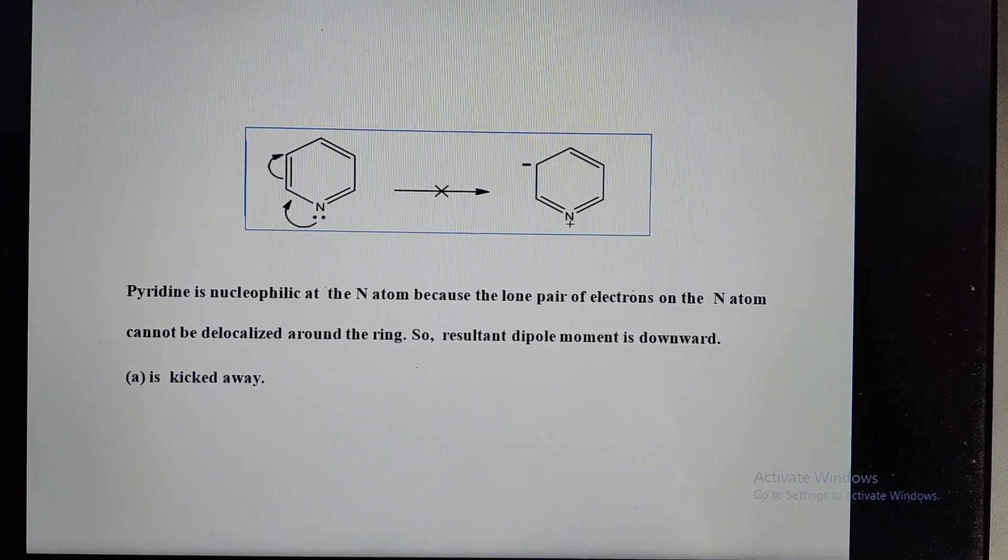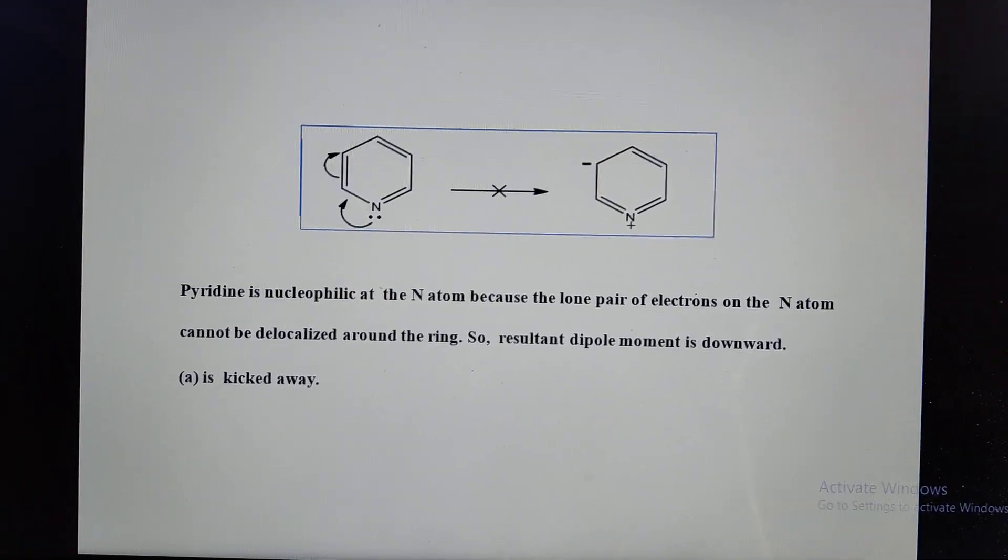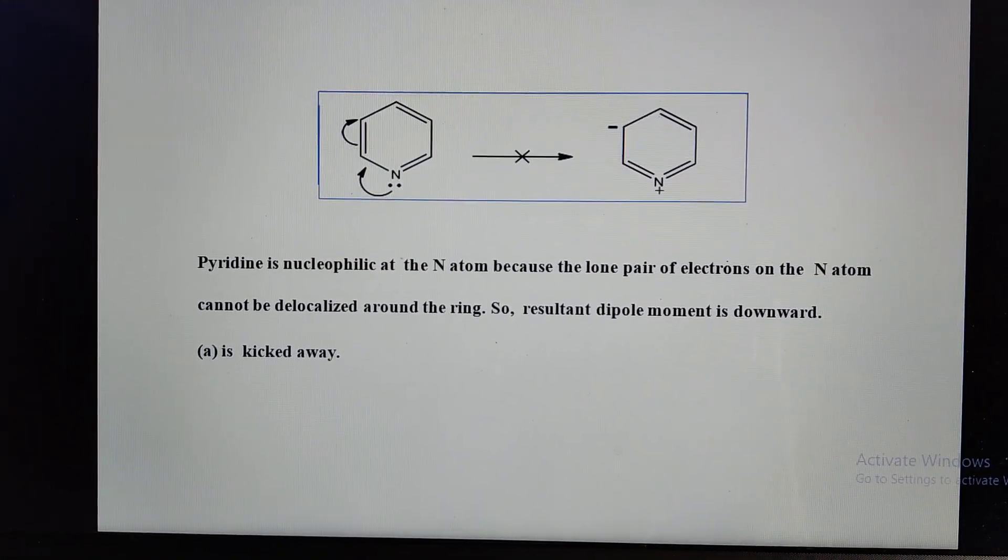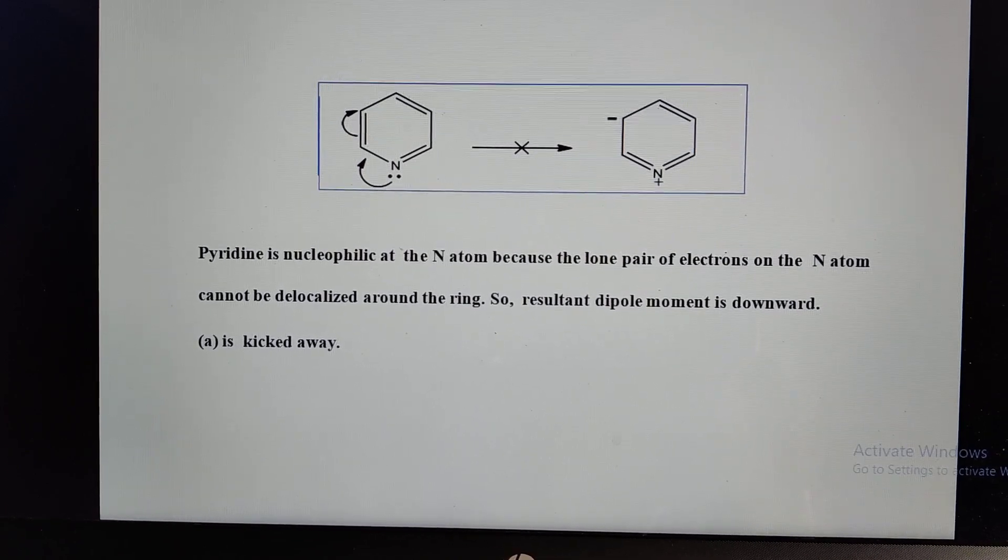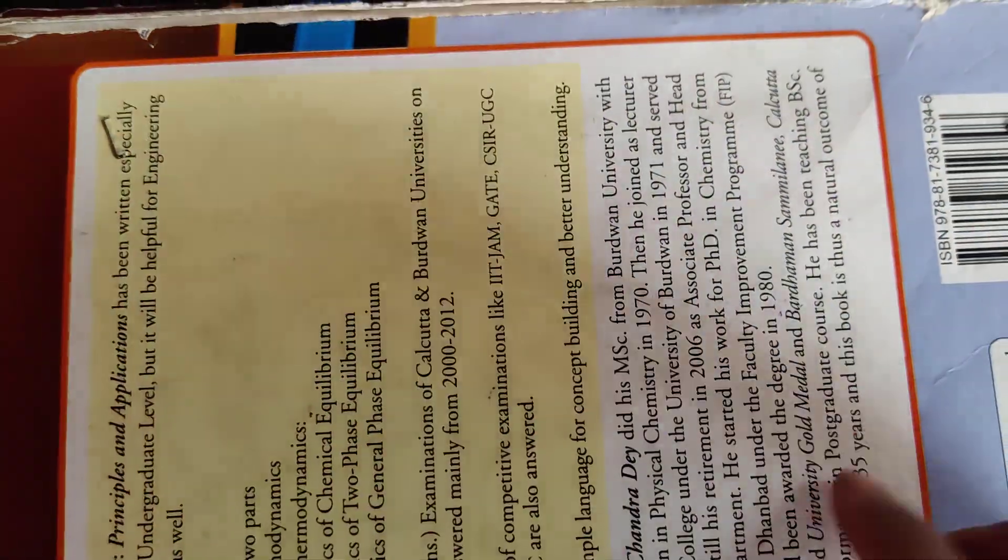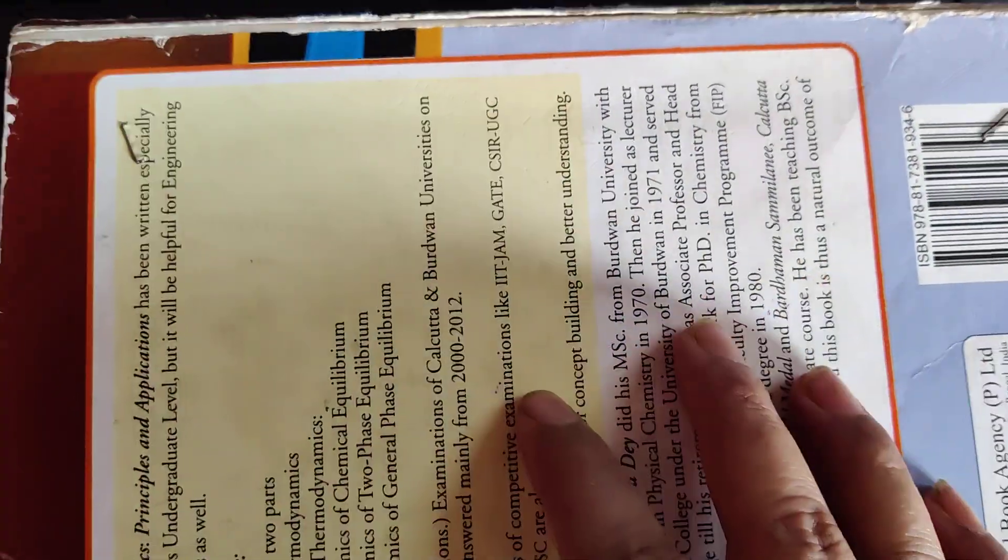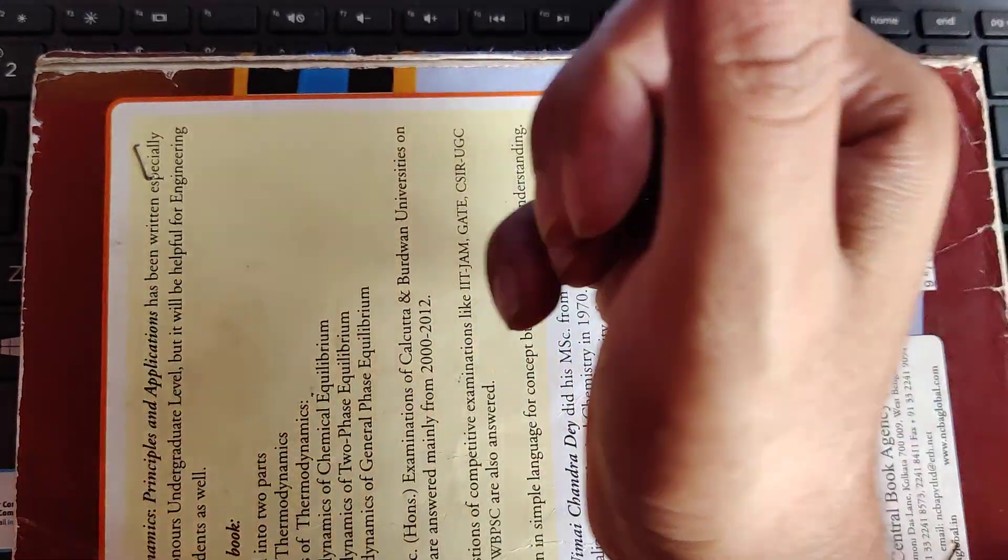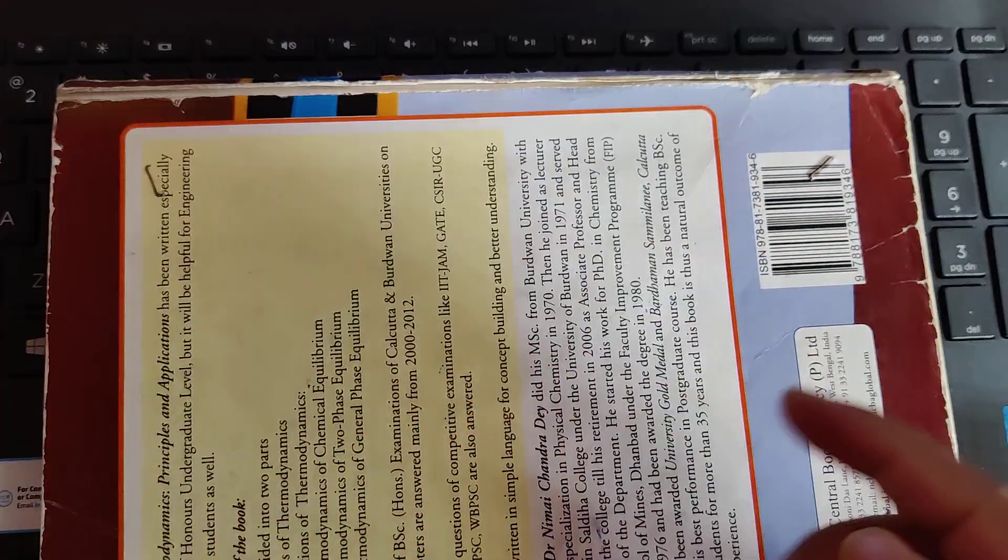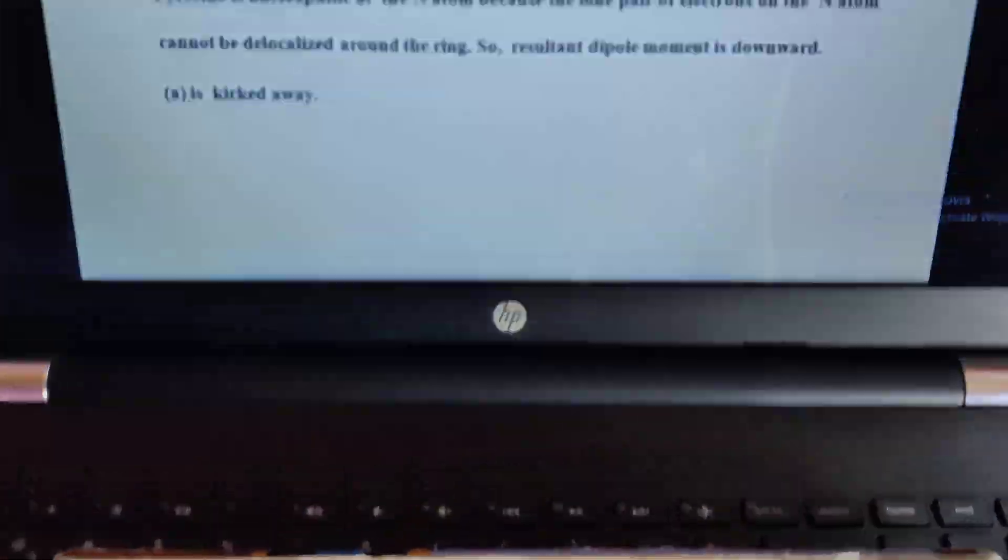First, we'll see the case of pyridine. In pyridine, the lone pair which is present in sp2 orbital is perpendicular or at right angle to the plane. Look at here - this is the plane of the carbon atoms of pyridine and the lone pair in sp2 orbital is just perpendicular to that. That's why delocalization will not take place and resultant dipole moment is downwards.